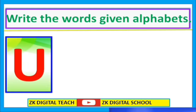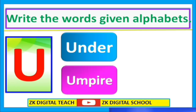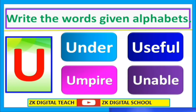U for Under, U-N-D-E-R, Under. U for Umpire, U-M-P-I-R-E, Umpire. U for Useful, U-S-E-F-U-L, Useful. U for Unable, U-N-A-B-L-E, Unable.